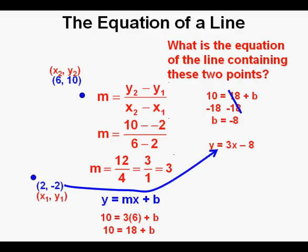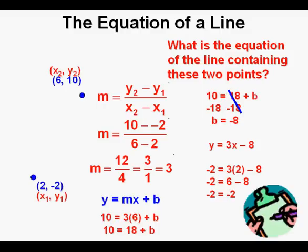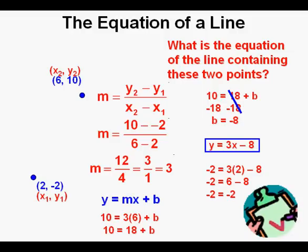We check using the unused point 2 comma negative 2. That becomes negative 2 equals 3 times 2 minus 8, which simplifies to negative 2 equals 6 minus 8, and finally negative 2 equals negative 2. Check. So we box in the equation y equals 3x minus 8 as correct.